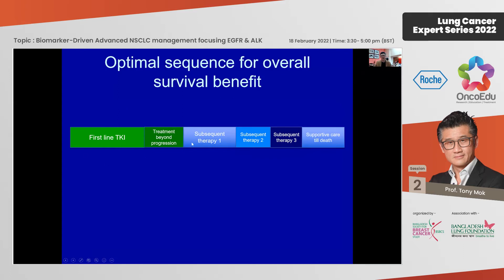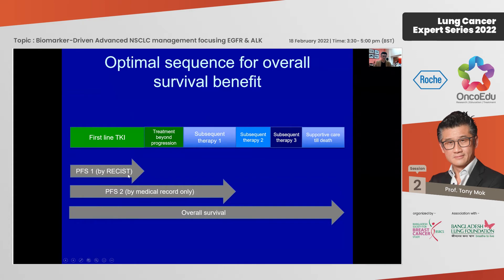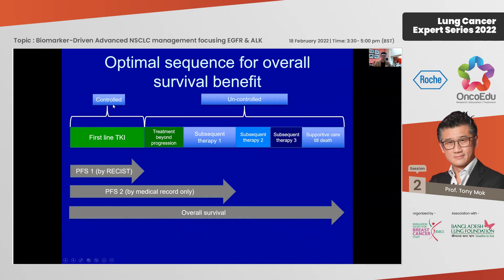The reason I say this is that first-line TKI controls progression-free survival well, but after progression, subsequent therapy is relatively uncontrolled, making overall survival comparison unreliable. We know exactly what the patient does in the first-line phase, but after progression we have no control on subsequent therapy. Therefore, if a small overall survival difference is seen, it can be due to variation in subsequent treatment rather than the drug itself.